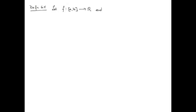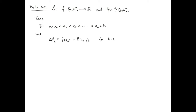Let's begin with Definition 6.4. We suppose we have a real-valued function on a compact interval [a, b] of the real numbers. We take a partition p, which looks like x_0, x_1, all the way up to x_n = b. Then we define delta f_k as the difference in the function at the right endpoint of the subinterval minus the function value at the left endpoint — so it's f_k minus f_{k-1} — for each k from 1 to n.